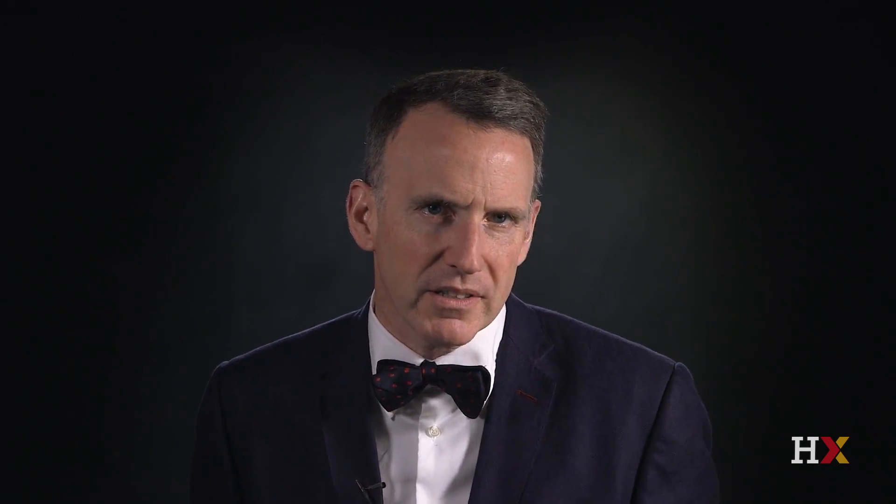A lot of people makes it easier to share the fixed costs involved in theaters or museums. Urban scale allows specialization in restaurants and consumer services. You can find dozens of nail salons within a few blocks on the Upper East Side of Manhattan, and many leafy suburbs lack even one. The flow of ideas in cities might also enable more creativity in cooking or in the arts.